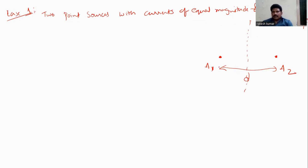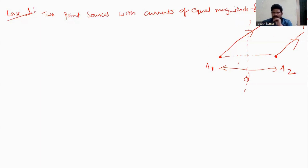Now, which signal will reach point p earlier? Automatically, the power radiated from a2 will reach point p first, and a1 will reach point p a little bit later. So the radiation from a2 will reach point p earlier than from a1. This is due to path difference.